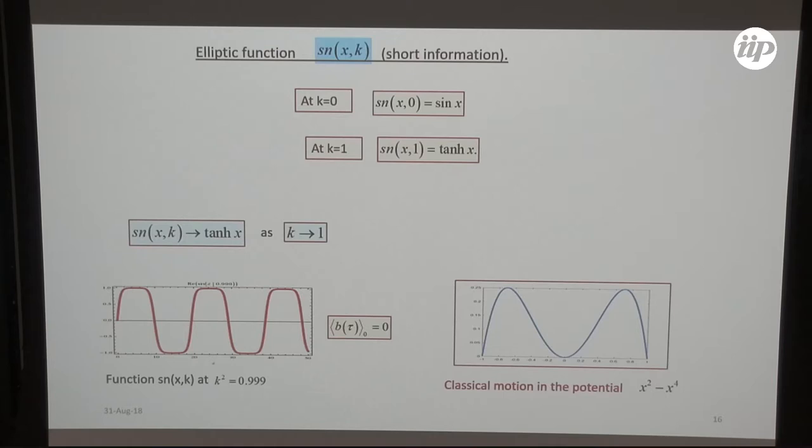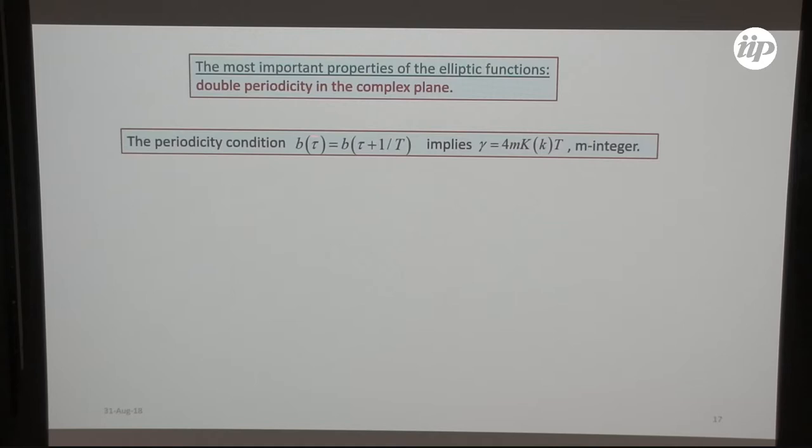Most important properties of the elliptic functions: double periodicity in complex plane. They are periodic not only along the real axis, they are periodic also along complex axis. We use this periodicity. This m must be integer. And this K is actually elliptic integral of the first kind.